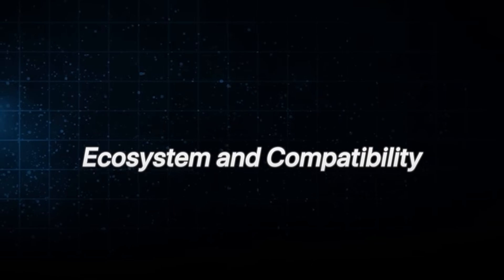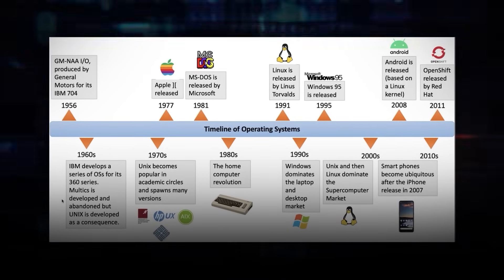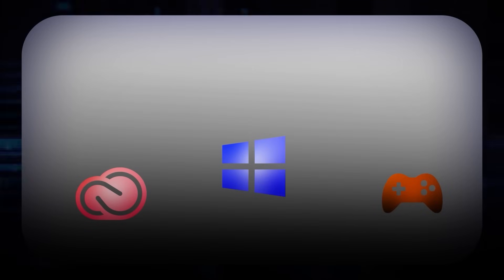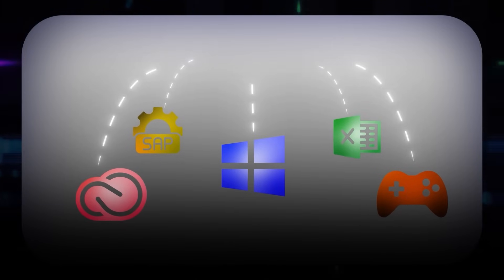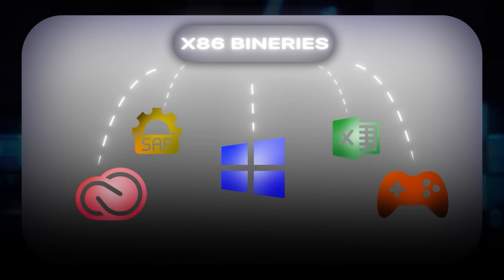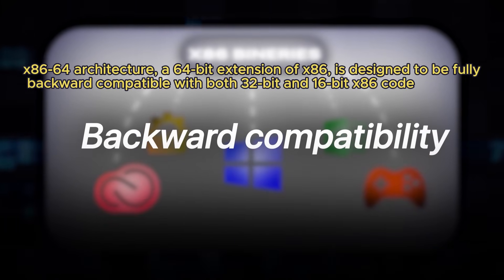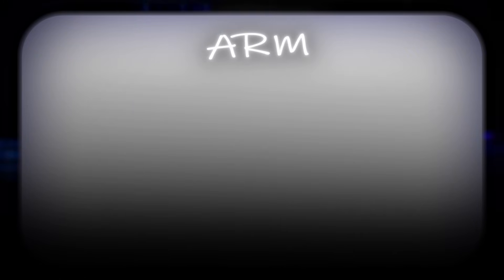How about the ecosystem and compatibility of x86 versus ARM? x86 benefits from decades of entrenched support in operating systems, drivers, and software tooling. Microsoft Windows, Adobe Creative Suite, many games, and enterprise workloads like Excel macros or SAP environments are deeply tied to x86 binaries. However, this compatibility comes with a trade-off: maintaining backward compatibility has burdened x86 with a lot of architectural complexity.